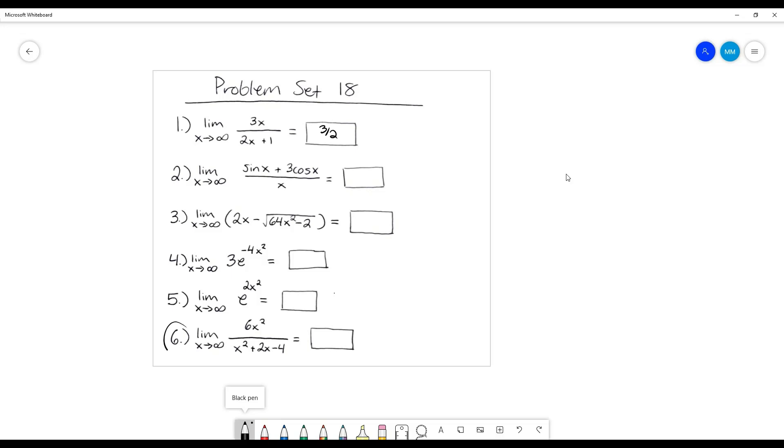I see a similar thing down here for question number 6. Since this has a power of 2, and this also has a power of 2, since they have that same power, it's just the coefficient, so it's 6 divided by 1 or just 6.